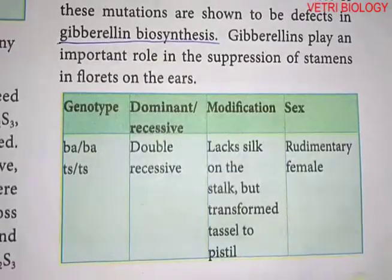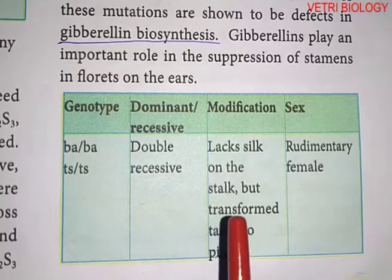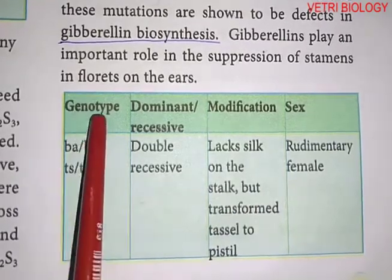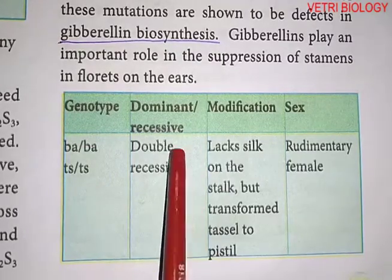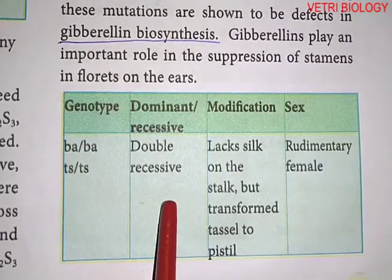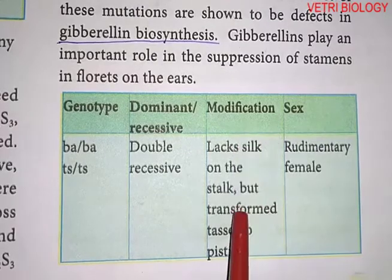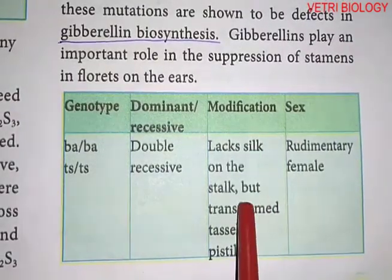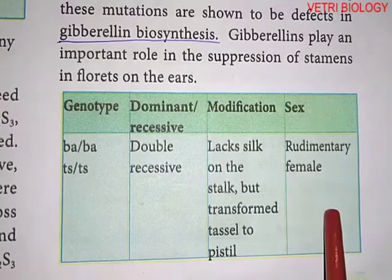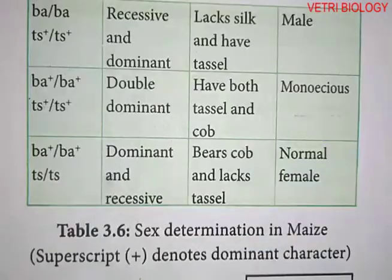Now let us see the tabular column of sex determination in maize. The first column shows genotype. The second column shows whether it is dominant or recessive. The third column shows the modification of sexual structures. The fourth column shows which sex is produced.